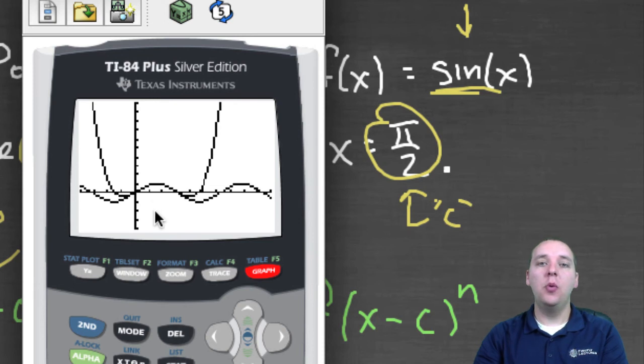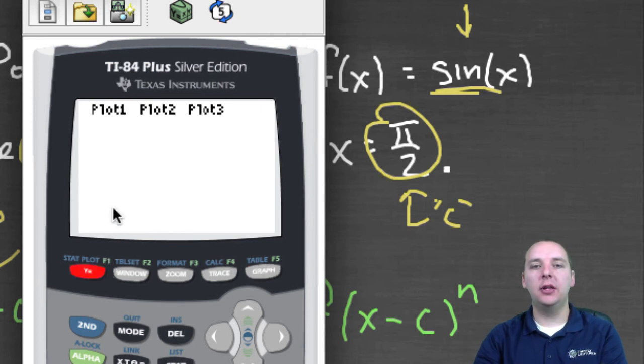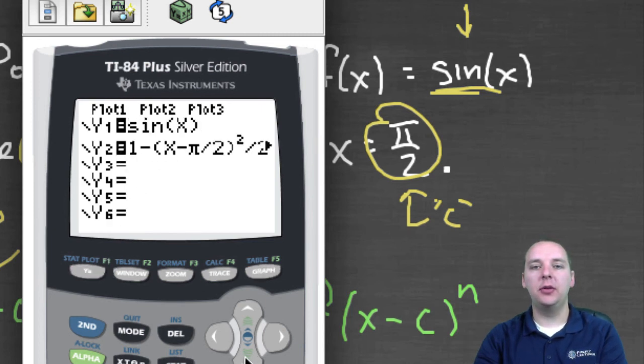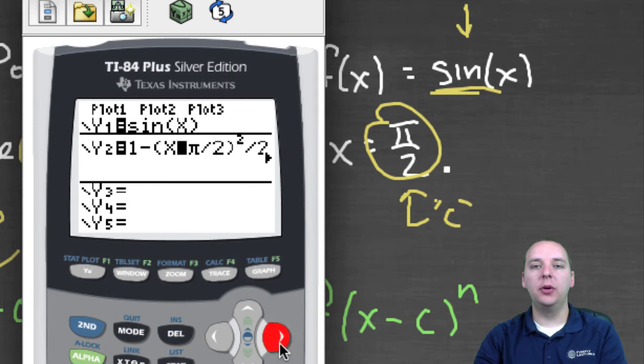What if you wanted it more accurate for longer? Well then we would need to tack on additional terms. With this Taylor polynomial, we have it currently up to degree four, but we could tack on additional terms and it would follow the sine curve for longer. Here's the last thing I'll close with: what if I took out some of these terms, took out that degree four term and just turned it into a quadratic?